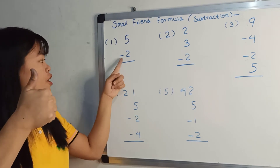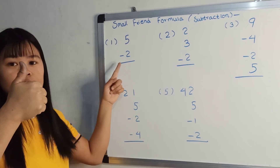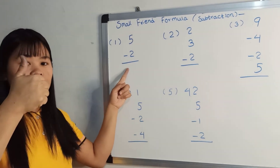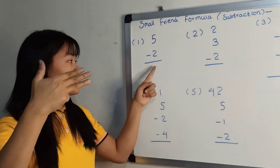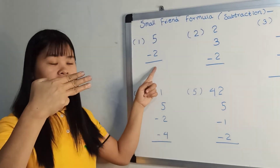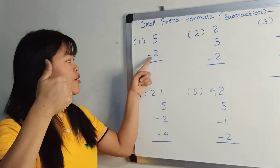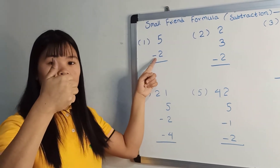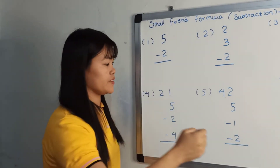5, minus 2, 2, no, seven, 6, 3. So 3, so 3, so 5, so 5, so 5, minus 2, 2, minus 3, so 3, so 5.